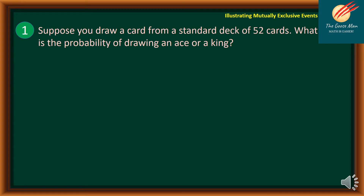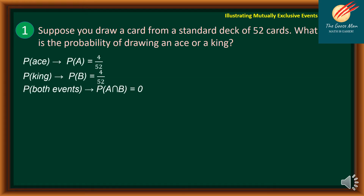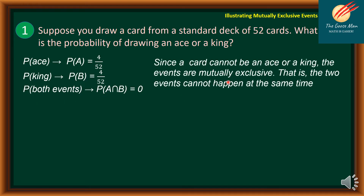Example number one: Suppose you draw a card from a standard deck of 52 cards. What is the probability of drawing an ace or a king? The probability of A — drawing an ace — is 4 out of 52, since there are four aces. The probability of B — drawing a king — is also 4 over 52, since there are four kings. The probability of both events is null, because a card cannot be an ace and a king at the same time. So the events are mutually exclusive.